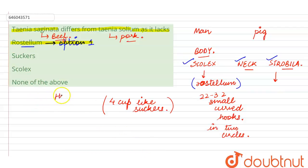And secondly, hooks are also absent here. So, the other options which are marked here are the wrong ones, because suckers and scolex will be present in Taenia saginata as well as Taenia solium.